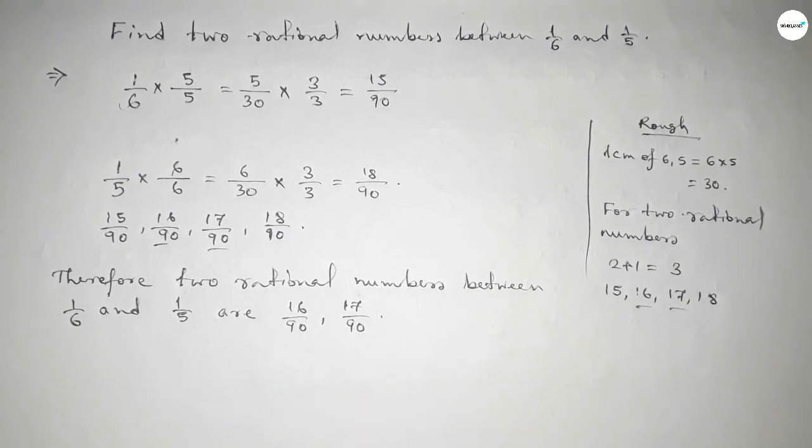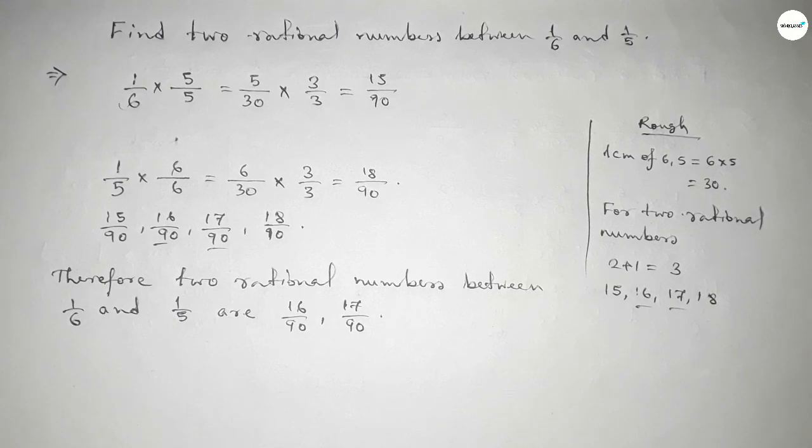So this is the process to find two rational numbers between 1/6 and 1/5. That's all, thanks for watching.